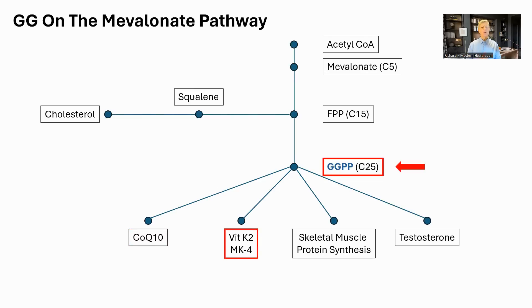GG is also required for the manufacture of menaquinone-4, a form of K2, which is made from K1, and is the only form of K2 manufactured in the body. MK4 is critical in bone health — it directs calcium to where it should go in bones and teeth, and not where it shouldn't, in the soft tissues such as blood vessels and the kidney.